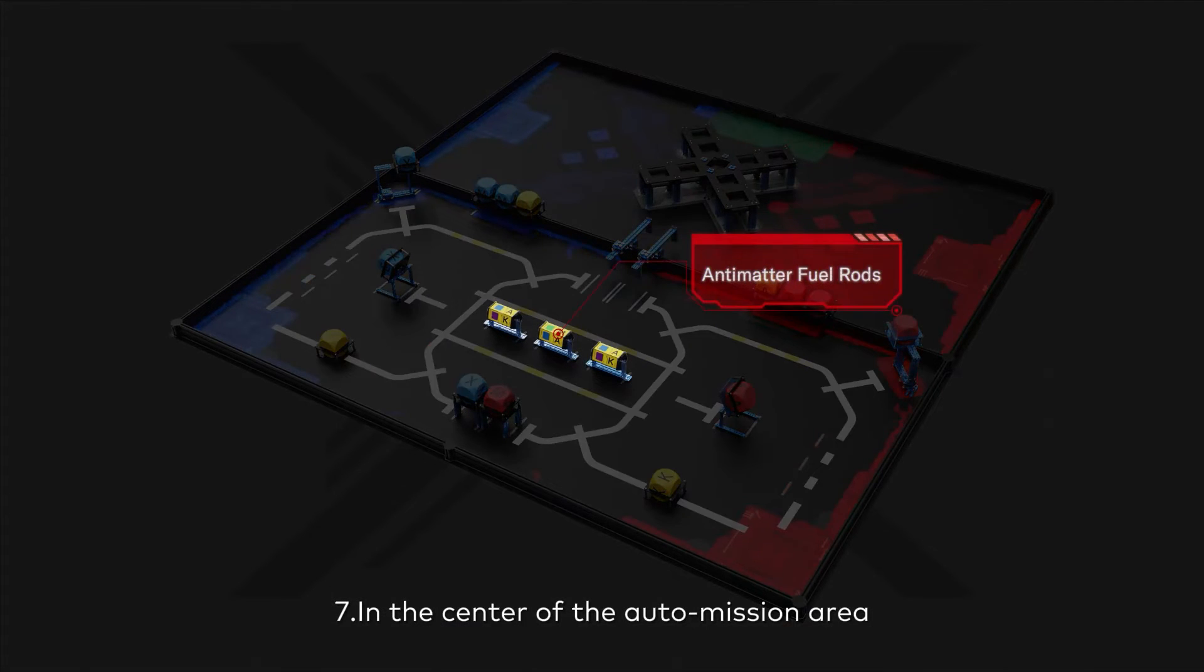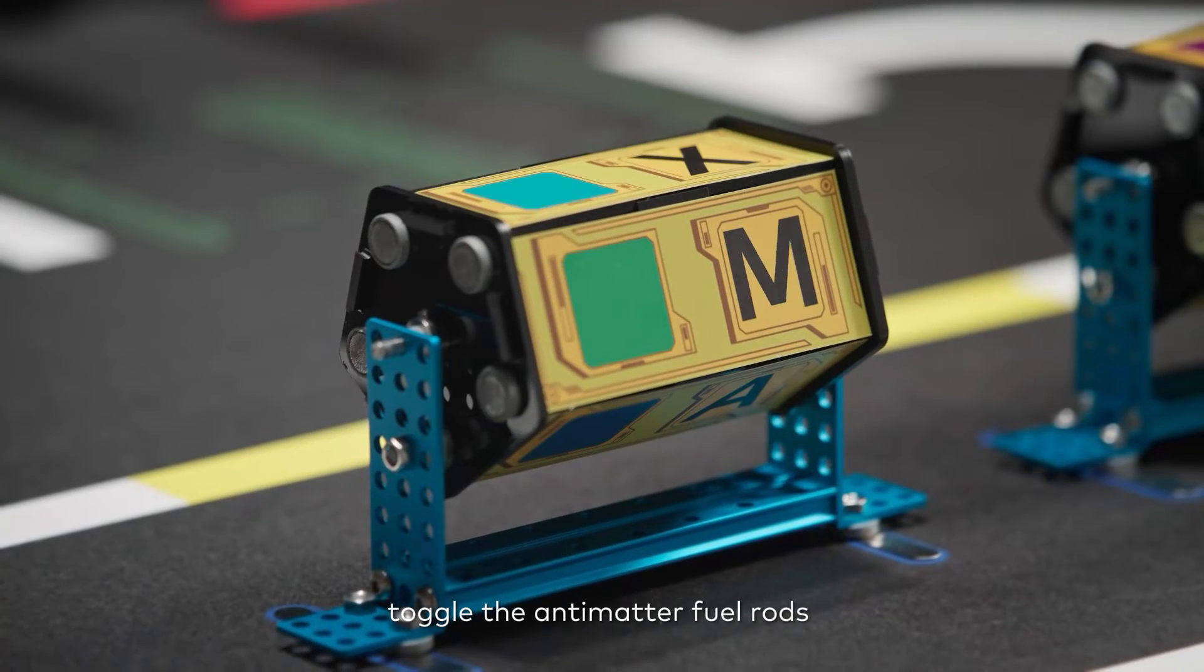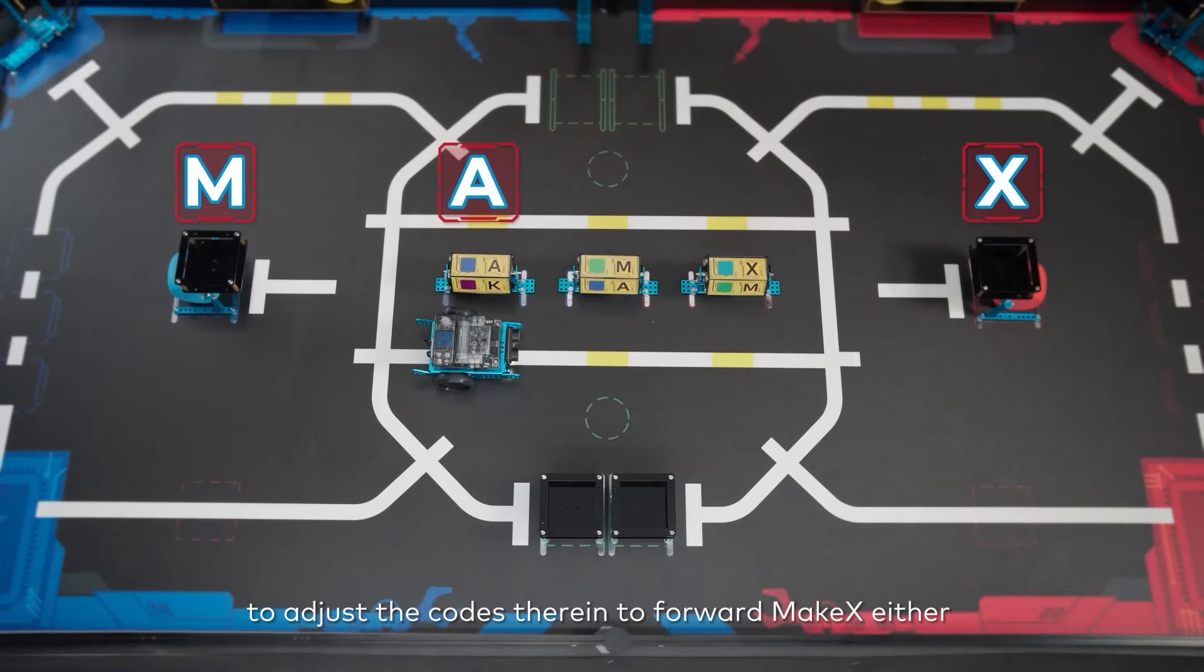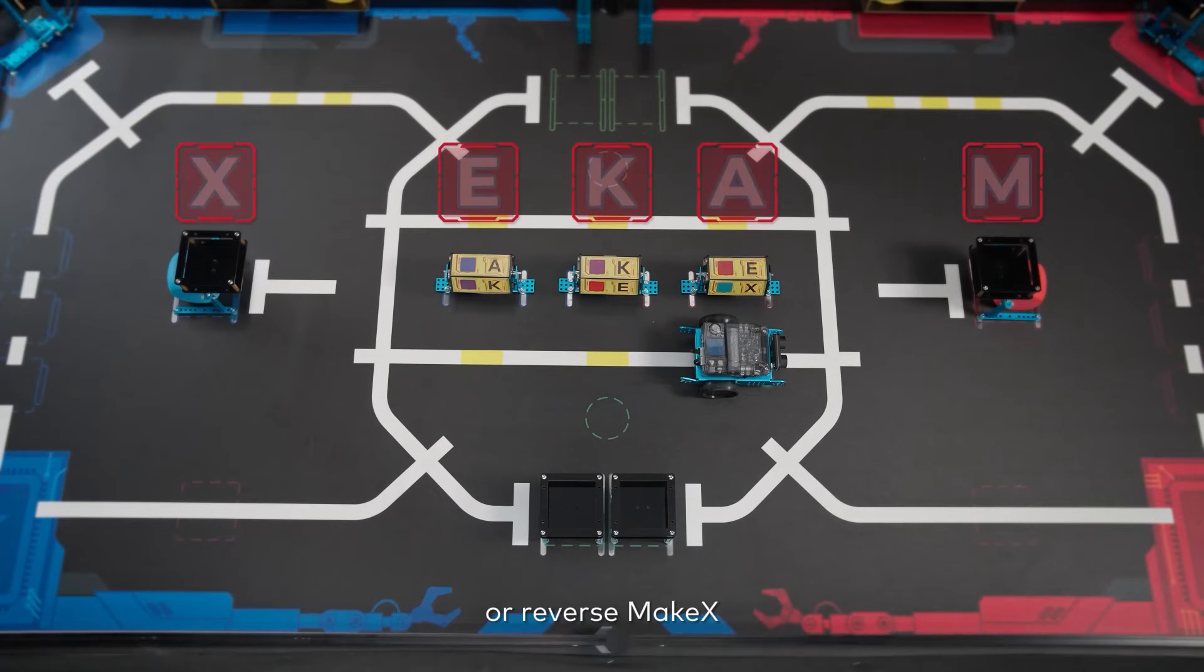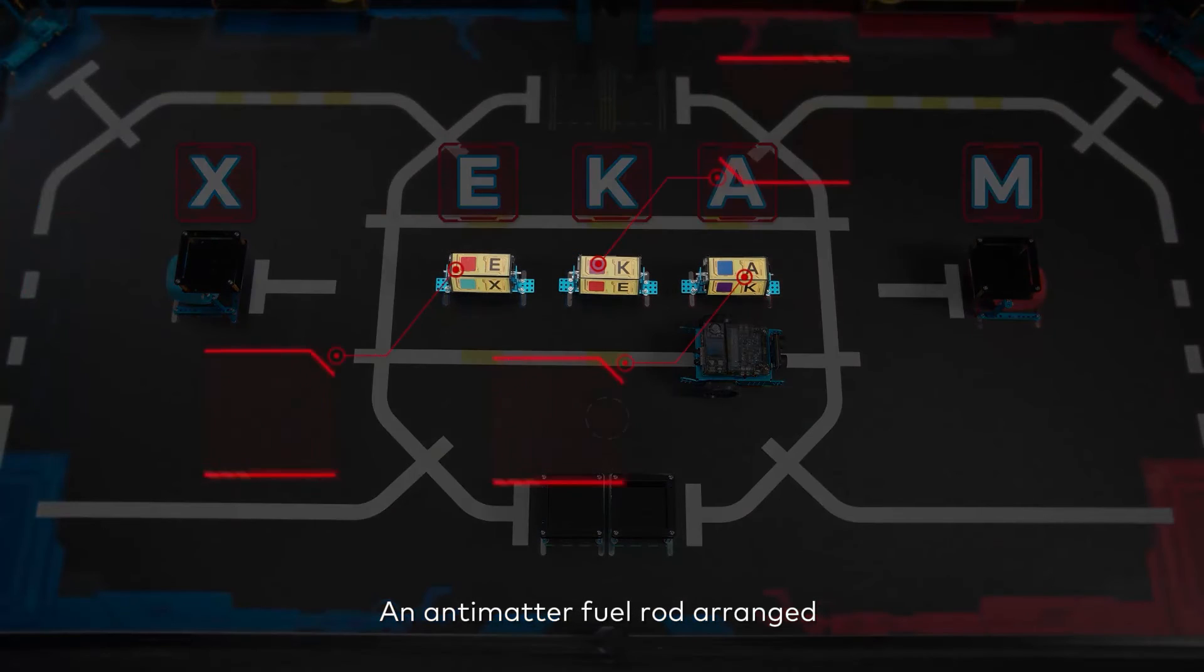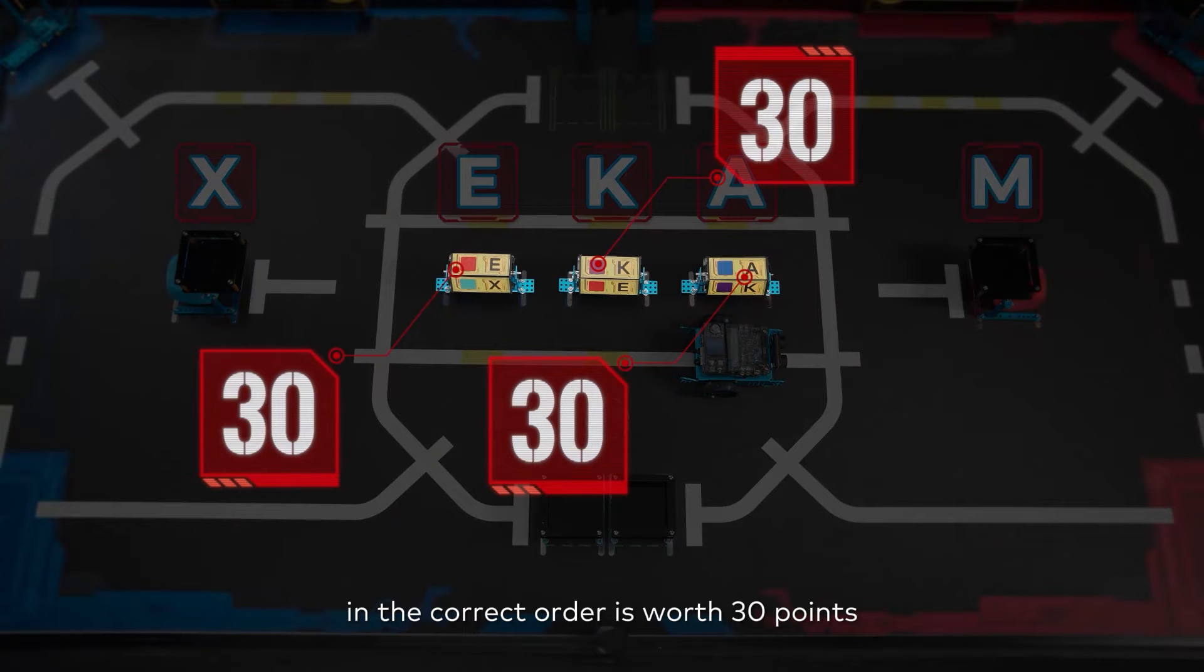In the center of the auto mission area, toggle the antimatter fuel rods to adjust the codes therein to forward Make X or reverse Make X. An antimatter fuel rod arranged in the correct order is worth 30 points.